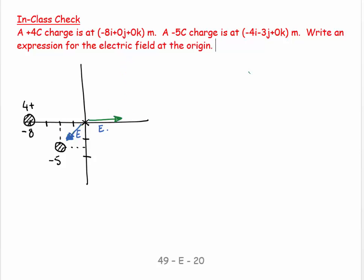And then I know, let's call this E1. So, E1 is equal to KE Q over R squared, times R hat, which equals KE 4, remember don't worry about the sign on it, over R squared. That's going to be 8 squared, because that is 8. And then, times R hat. Now, R hat, I want a unit vector going in that direction. So, I'm going to say, 1i plus 0j plus 0k.